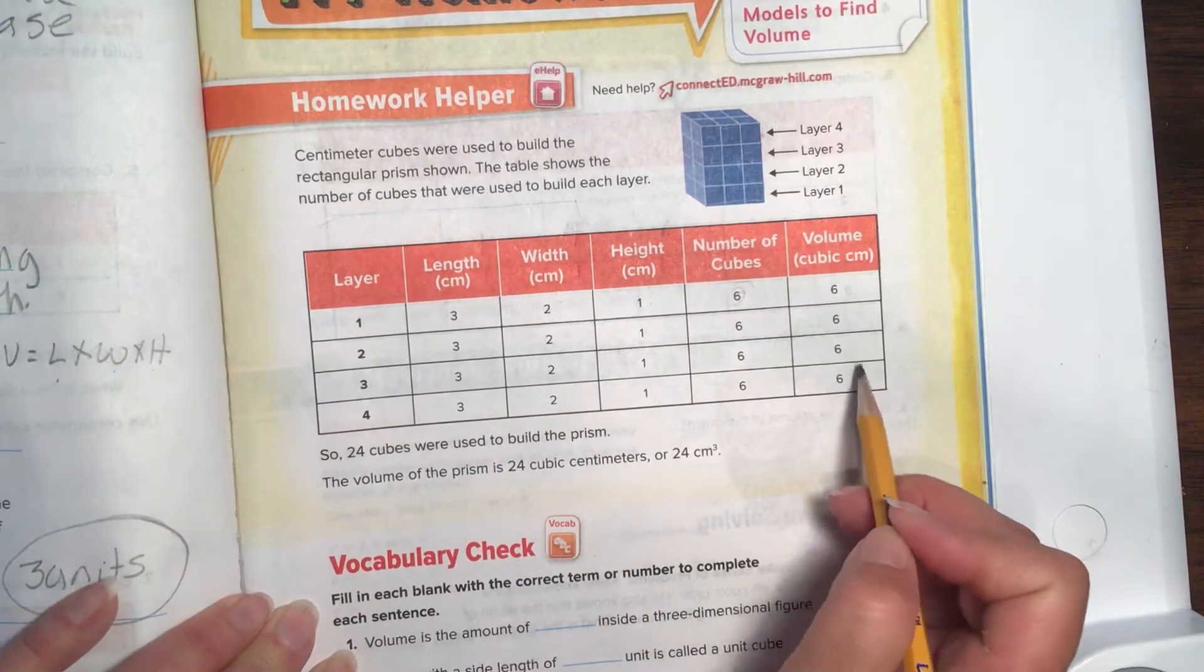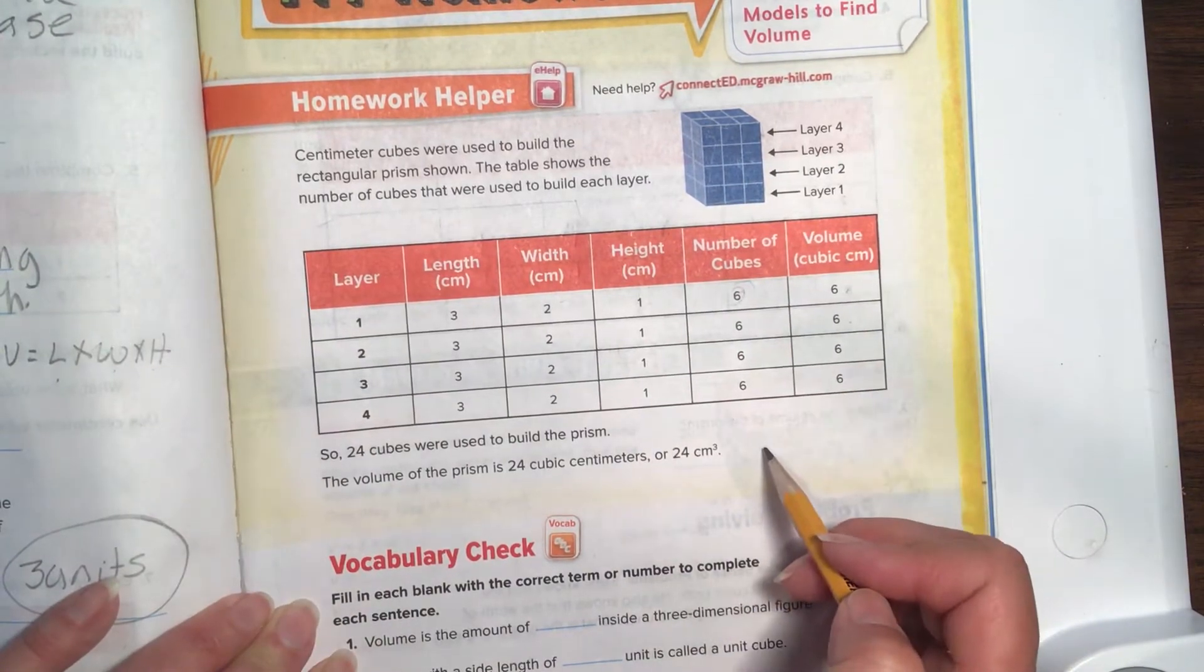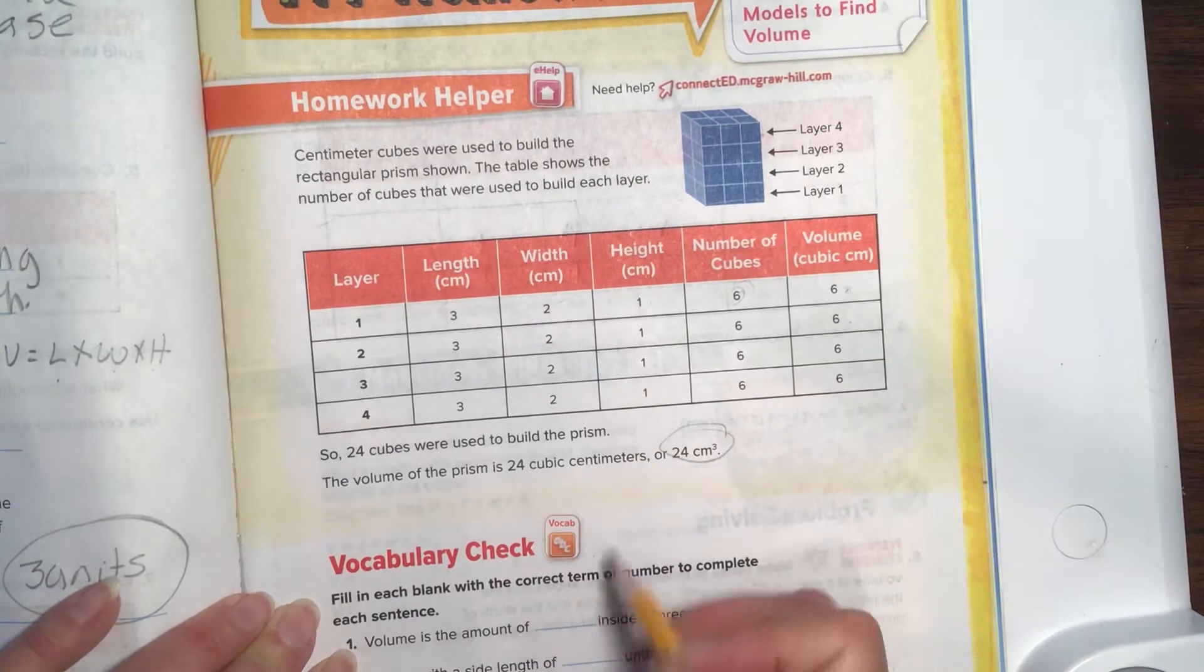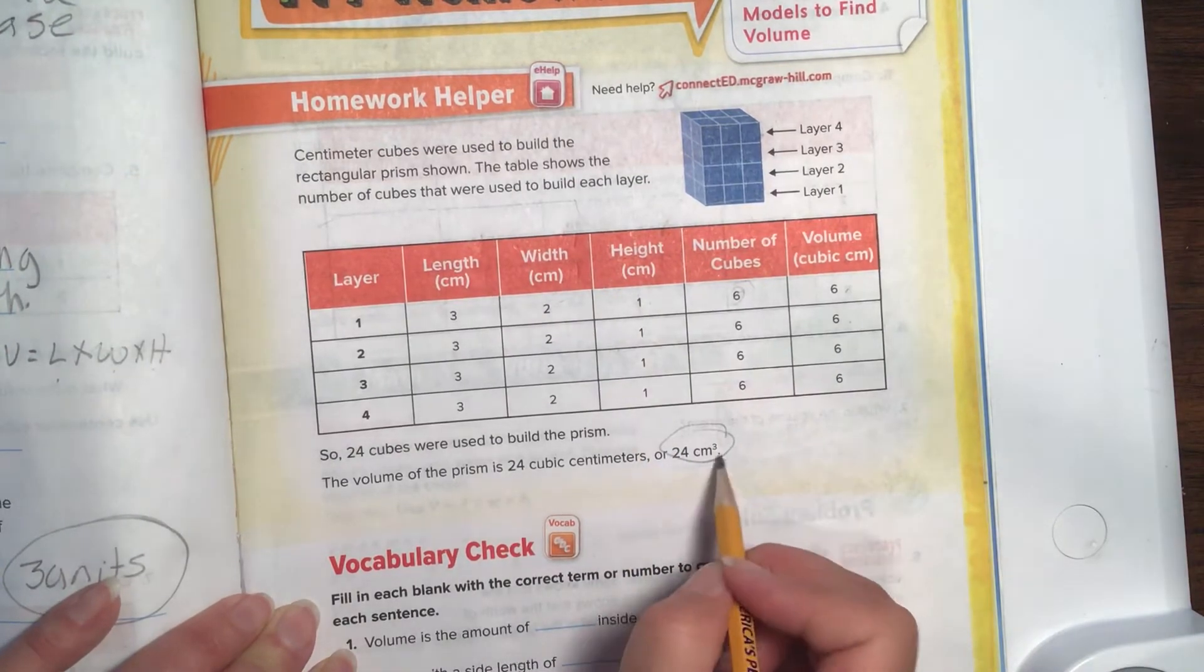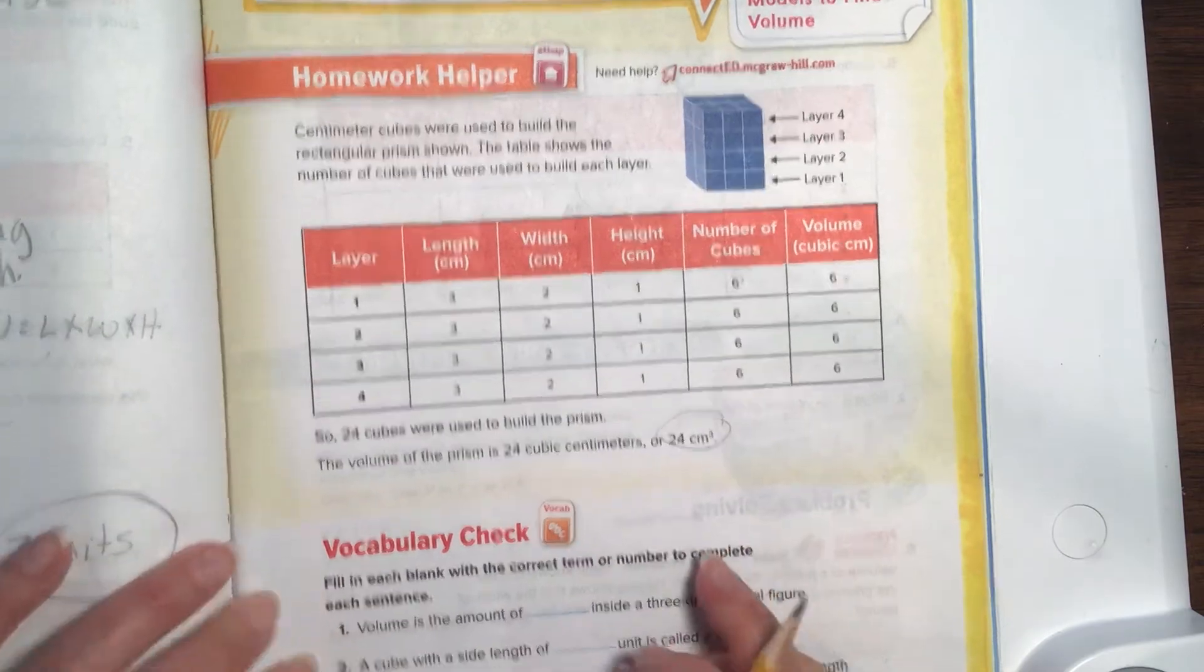So that we know when we times those together. 1, 2, 3, 4. 4 times 6 is 24 cubic centimeters cubed. Centimeters cubed.